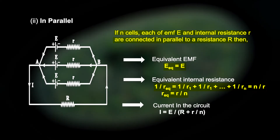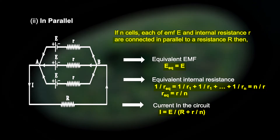After finding the equivalent internal resistance, it is added in series with the external resistance R. So the current formula becomes: I = E divided by (R + r/N), where R is the external resistance and r/N is the equivalent internal resistance for the parallel combination.